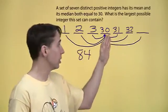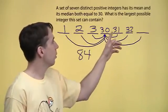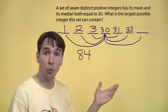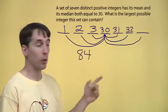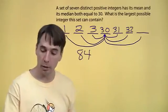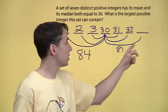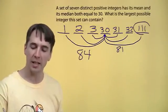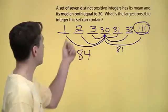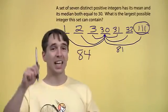We need them to be larger than 30, because we know that 30 is in the middle, because it's the median. So this one's one more than 30, this one's two more than 30, so that's three total for these two, and that leaves 84 minus 3. 81 for this to be as large as it possibly can. 81 and 30, that is 111, and that's the largest possible integer this set can contain.